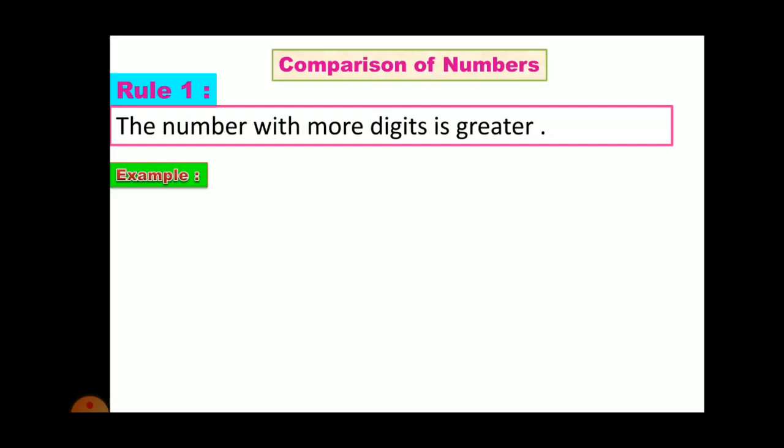Rule number 1: The number with more digits is greater. For example, we have 47,28,123 and 4,72,823. In the first number,